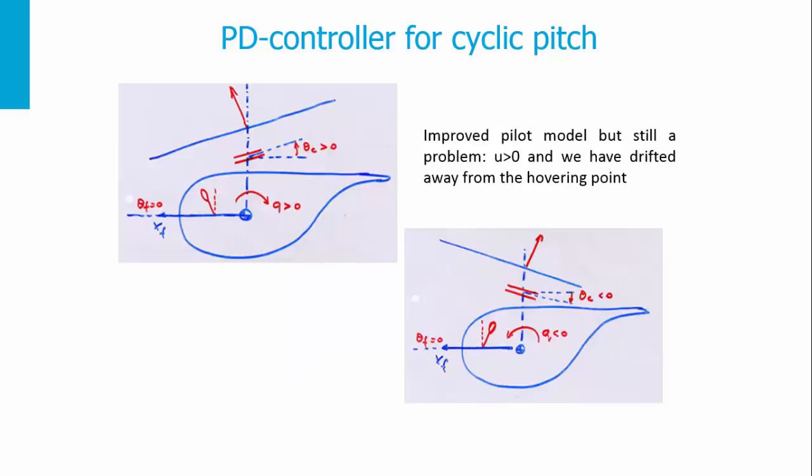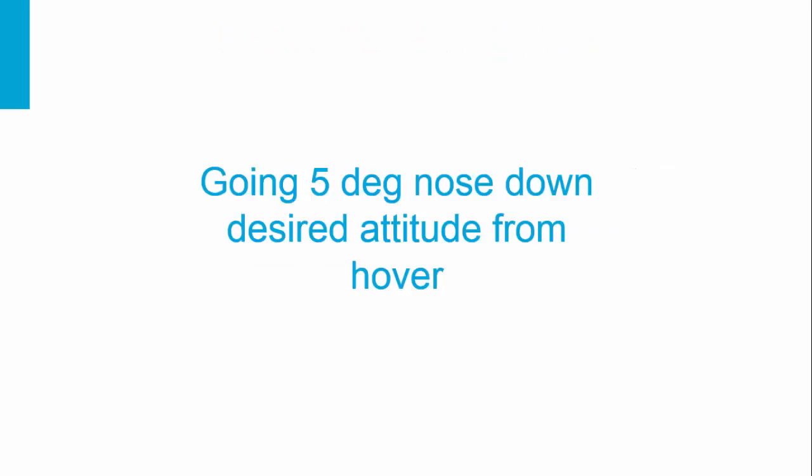However, what you don't see clearly on the graph is that even with the improved PD controller, we still have a problem. We may have drifted away from the hovering point, so we are not going to pitch attitude zero, and we can also have a forward velocity that is not zero. We go to a stable value, but not the one we wished. If the pitch rate Q is higher than zero, we input stick forward, and as Q builds up, we take the stick back to get theta F to zero.